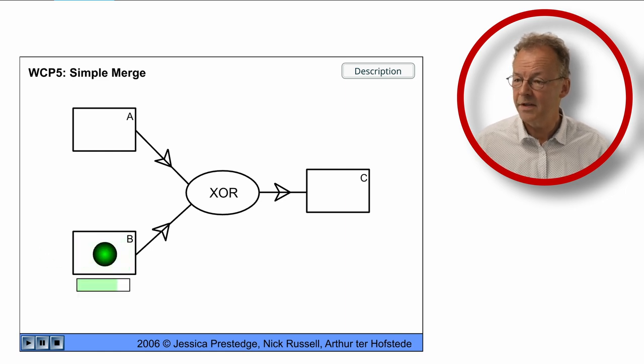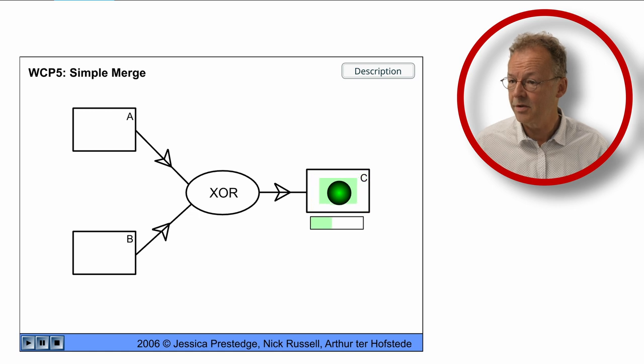If we come from B, it's the same behavior. The token is immediately passed to task C.